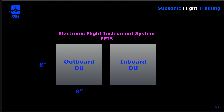The displays on the 747-400 are 8-inch square displays. Depending on the airplane, these displays could be smaller or larger. On the 757-767 they were much smaller displays, but on the 787 they're much bigger displays. The 747 came in between those two airplanes, so at the time these were actually very large displays.